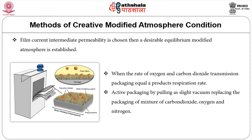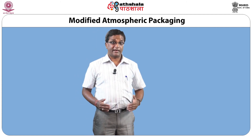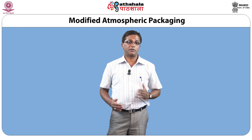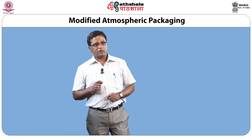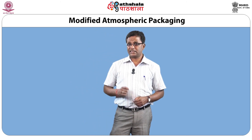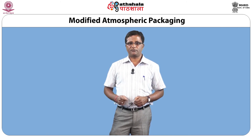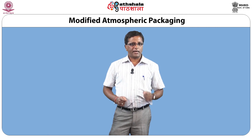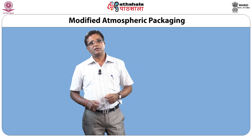If a film of correct intermediate permeability is chosen, a desirable equilibrium modified atmosphere is established when the rate of oxygen and carbon dioxide transmission through the packaging equals the product's respiration rate. In active packaging, by pulling a slight vacuum and replacing the packaging atmosphere with the desired mixture of carbon dioxide, a beneficial equilibrium atmosphere can be established more quickly than with a passively generated equilibrium atmosphere. Another active packaging technique uses oxygen, carbon dioxide, or ethylene scavengers or emitters, which are capable of establishing a rapid equilibrium atmosphere within hermetically sealed produce packages.